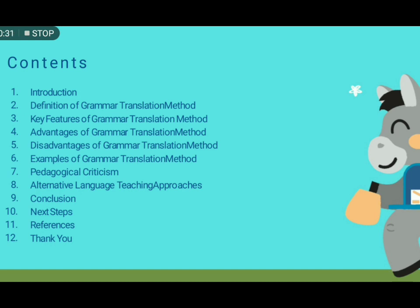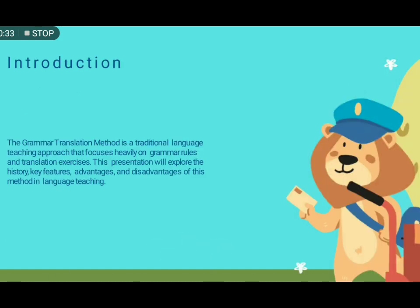We will also cover alternative language teaching approaches and the conclusion. First, what is the grammar translation method? It is a traditional method of teaching a language. It focuses more on written language because it considers written language superior to spoken language. It is a traditional approach to the teaching of Greek and Latin, and was the most prominent method in 19th century Europe.